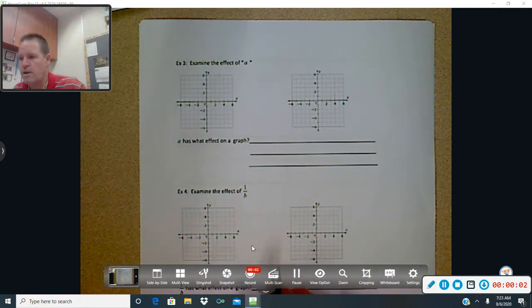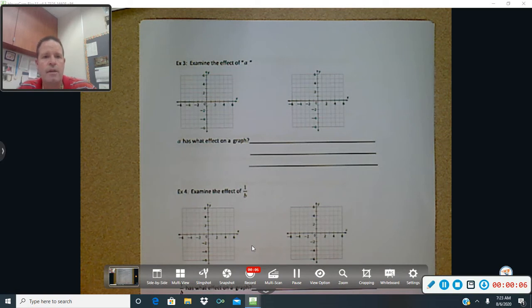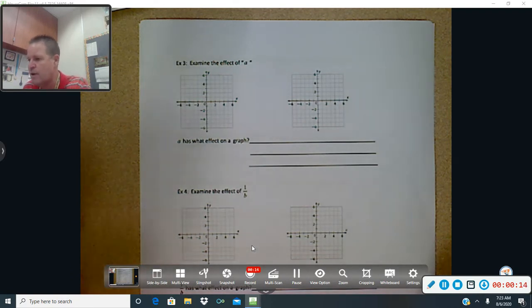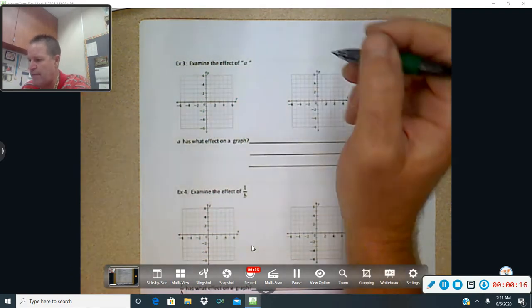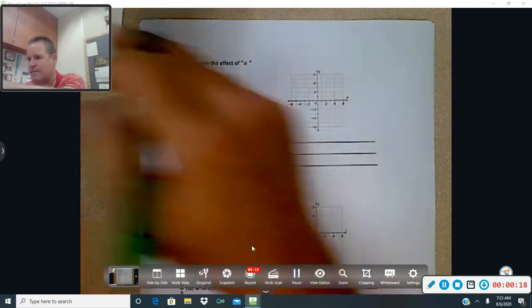OK, on page 1, you got an opportunity to see what h and k do. Now we're going to take a look at what does a do. What is the effect of a on the graph? OK, so let's just kind of as a quick review, let's review the general function. Let's write that at the top so we have it.